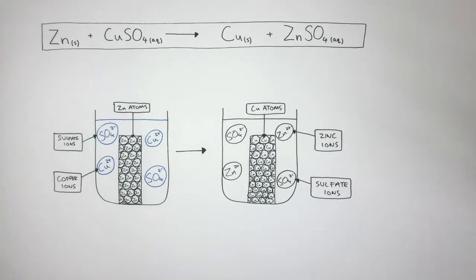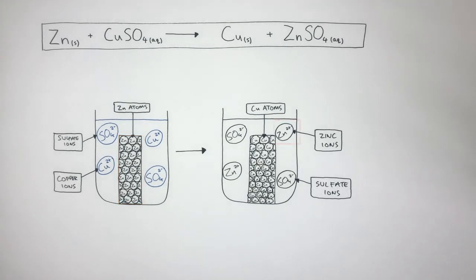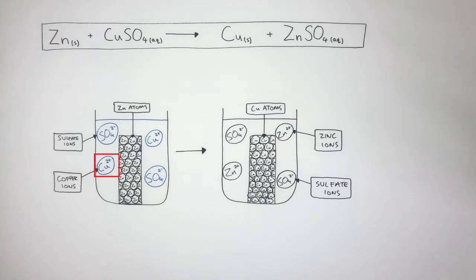We can see how the zinc atoms in the reactants have now become zinc ions in the products. And the copper ions in the reactants have become copper atoms in the products.